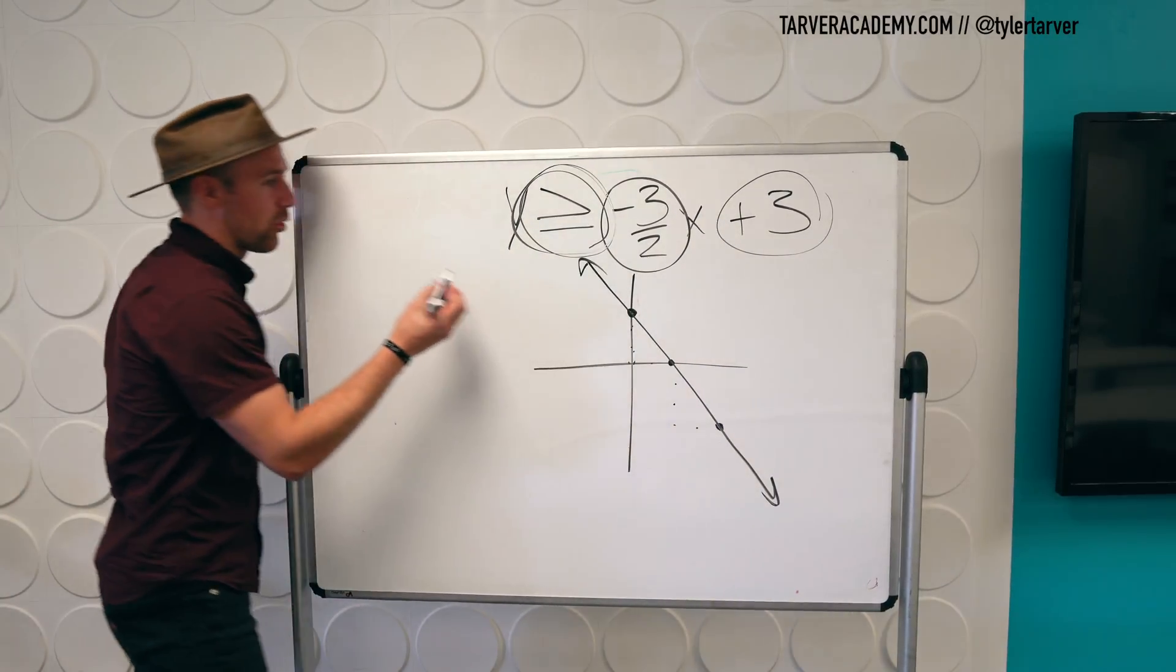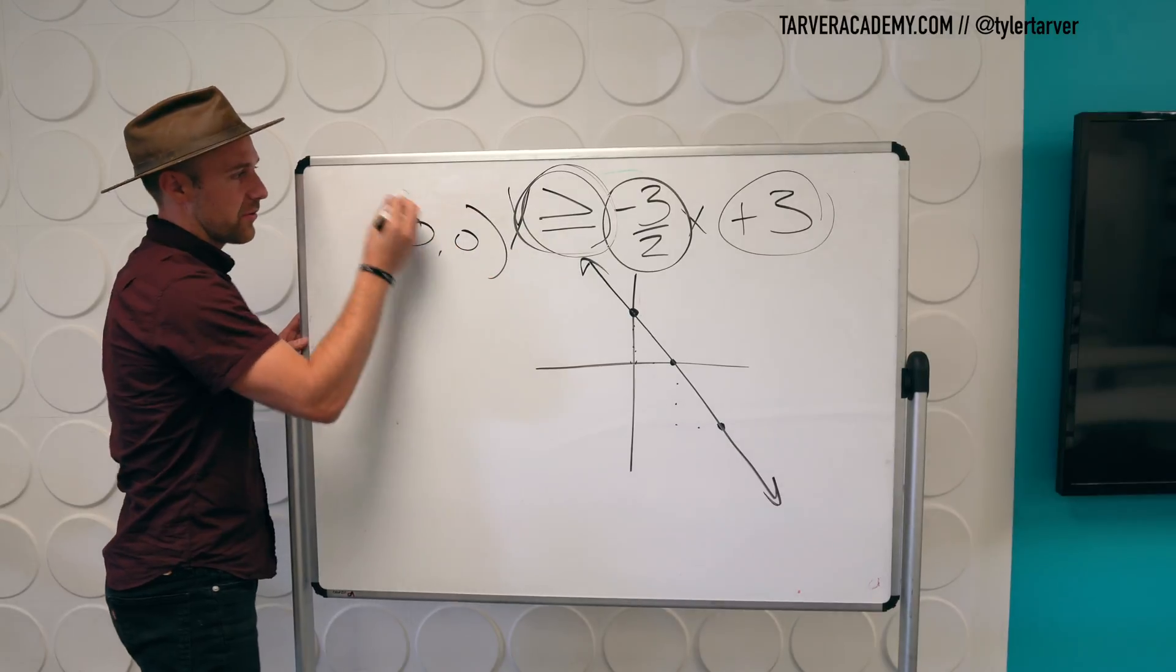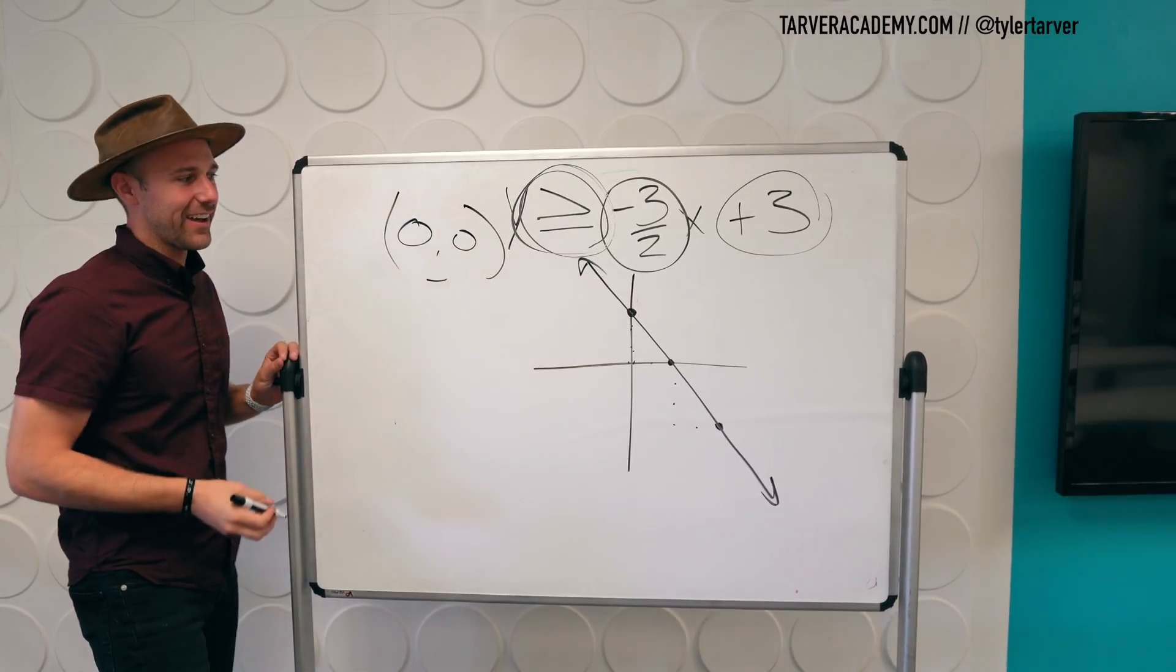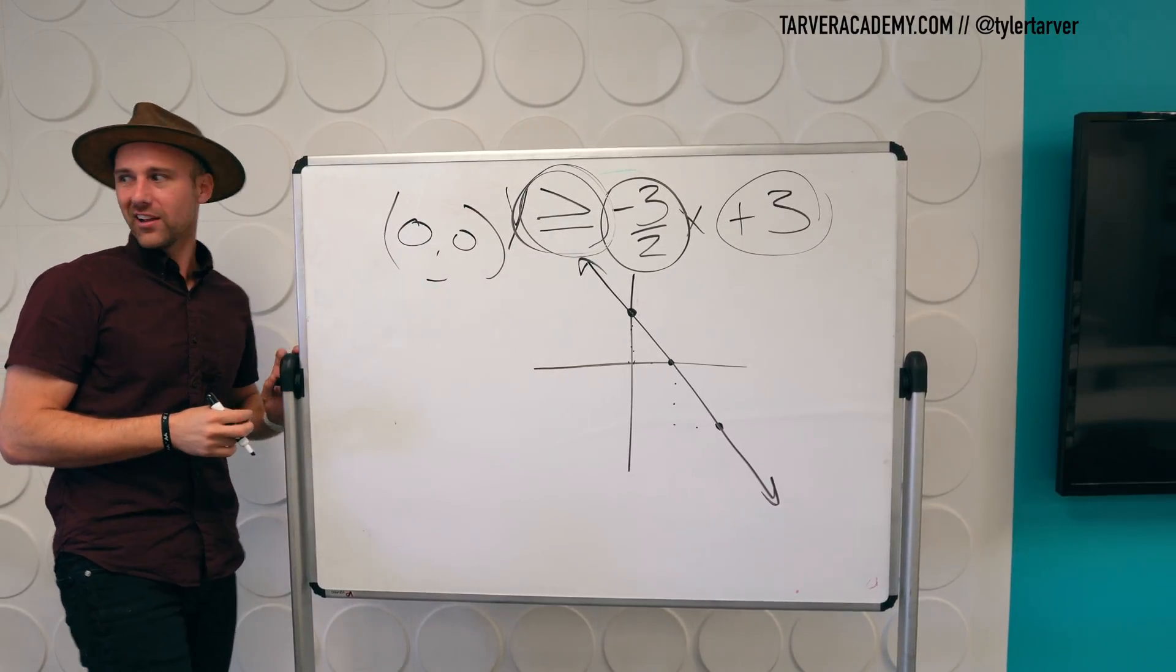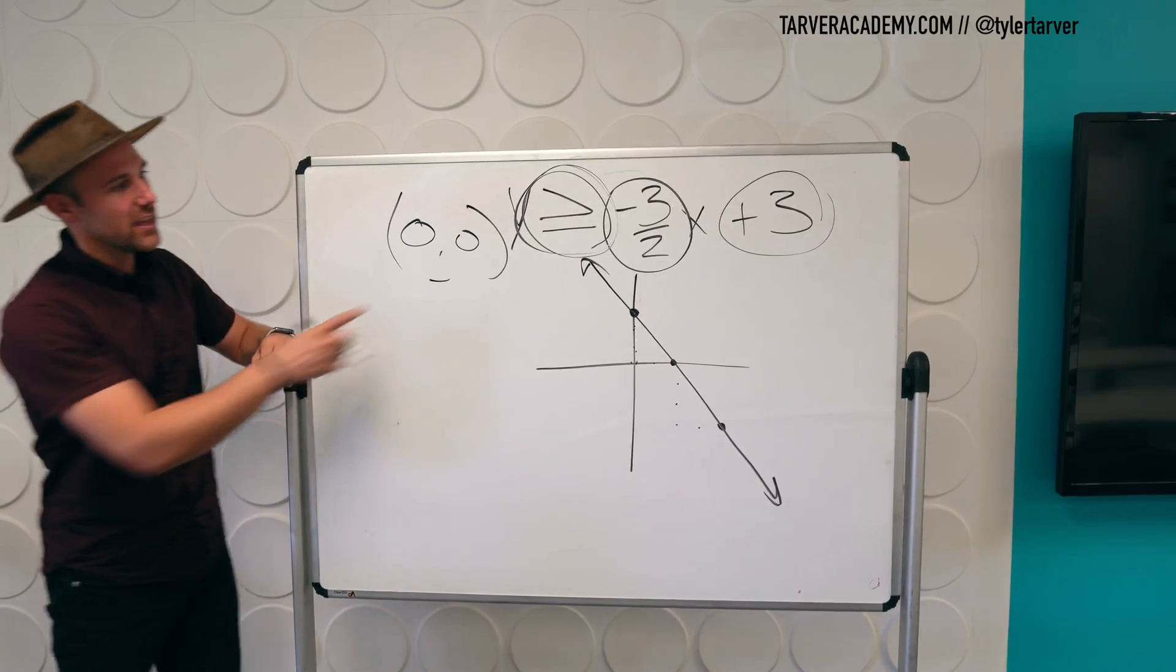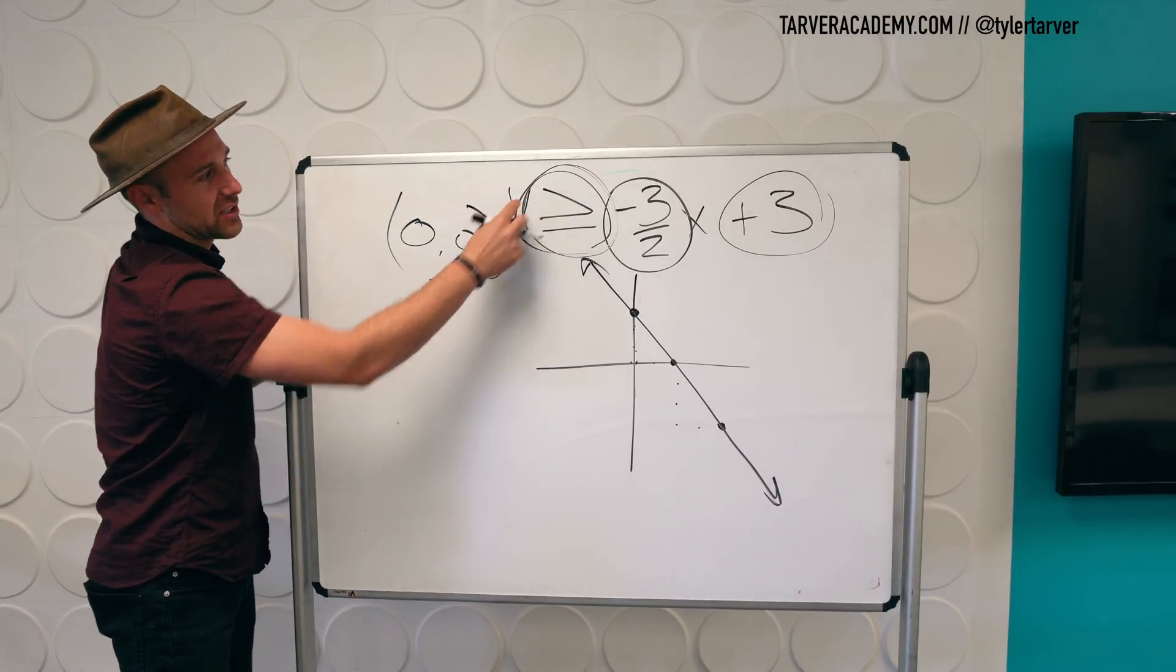What ifs. All right. So we're going to pick the origin. Zero, zero. Oh, he don't look that happy. He's smirking. Smirking. Okay. So zero, zero. So I'm going to plug those in.